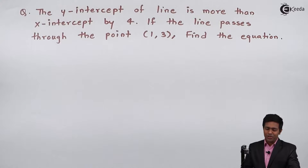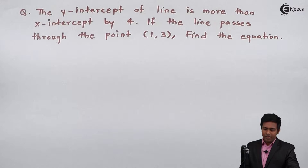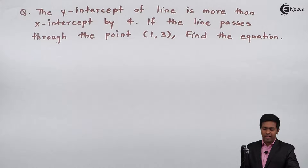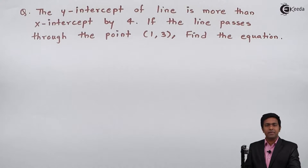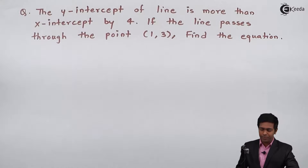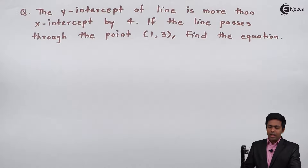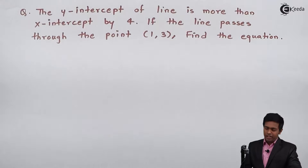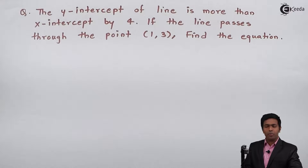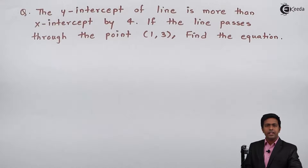Hello everyone. In this problem, the y-intercept of a line is more than the x-intercept by 4, and if the line passes through the point (1, 3), then we have to find the equation of the line.